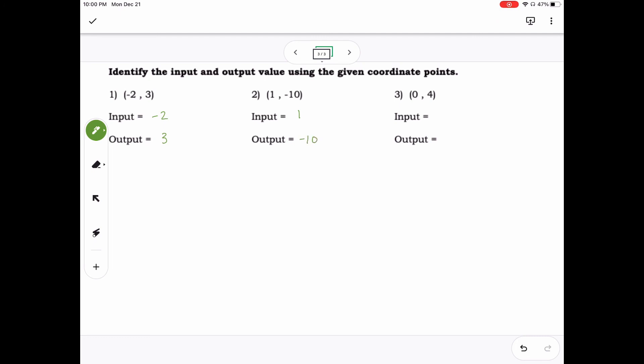For number 3, 0 is our input because it's the x, and 4 is our output because it's the y.